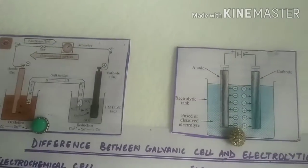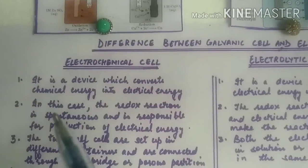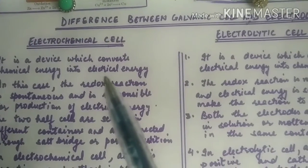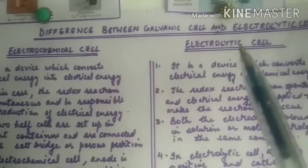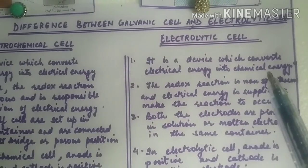The difference between electrochemical cell and electrolytic cell, first difference: it is a device which converts chemical energy into electrical energy. Electrolytic cell is a device which converts electrical energy into chemical energy.